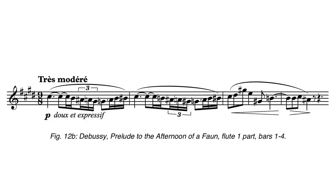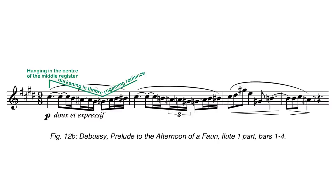The opening flute solo of Debussy's Prélude to the Afternoon of a Faun represents exactly this balance of qualities. The first note of C-sharp hangs beautifully in the air, probably evoking a folk flute to the original audience of Debussy's day. The line slowly descends toward the lower register, ever more dark in tone, but then pulls back to the C-sharp again by the end of the bar.